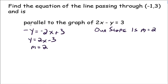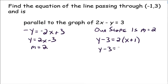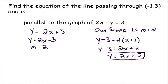Now we have a point and the slope of our line, so we can find the equation using the point-slope form. y minus 3 equals 2 times (x minus negative 1), which is (x plus 1). Writing that in slope-intercept form gives y equals 2x plus 5. That is the equation of your line. If you were to graph it, it would pass through (-1, 3) and be parallel to the graph of 2x minus y equals 3.